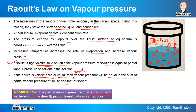For components A and B with mole fractions xA and xB and partial pressures pA and pB: pA ∝ xA and pB ∝ xB. This is the statement of Raoult's Law for a binary solution in terms of partial vapor pressures and mole fractions.